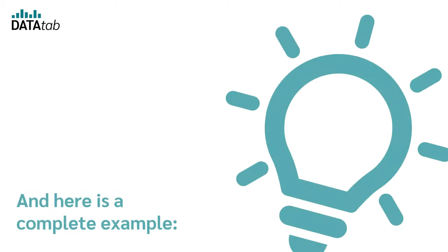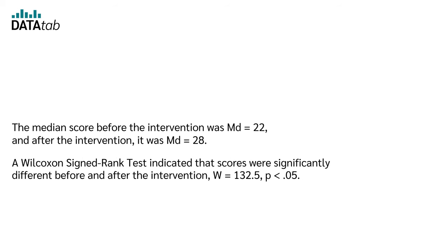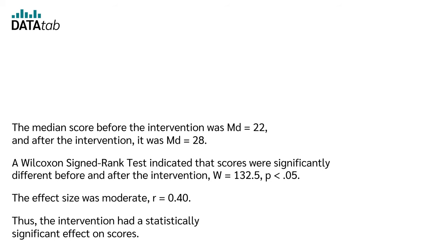Here is a complete example. The median score before the intervention was MD = 22 and after the intervention it was MD = 28. A Wilcoxon-signed rank test indicated that scores were significantly different before and after the intervention. W = 132.5, p < 0.05. The effect size was moderate, r = 0.40. Thus, the intervention had a statistically significant effect on scores.